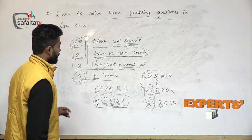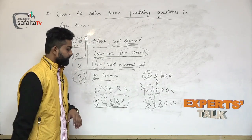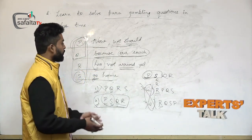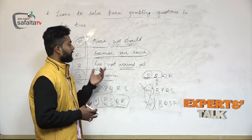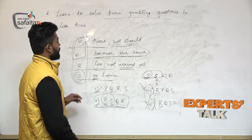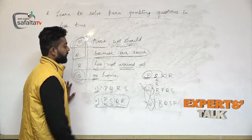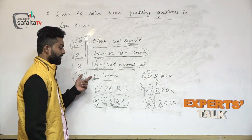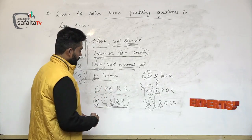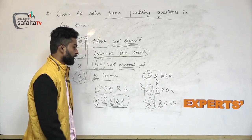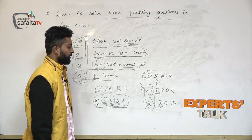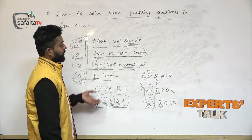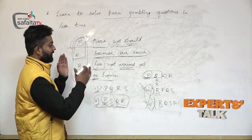So if you want to save your time while solving para jumbling questions, try to look for the first sentence or the basic sense of all four sentences. When you read the four sentences collectively, you will understand what the sentence is about and what they want to tell us. Once you identify the first sentence — say it starts with P — go for the option which has P in the starting; do not look at any other option, as that will only waste your time.